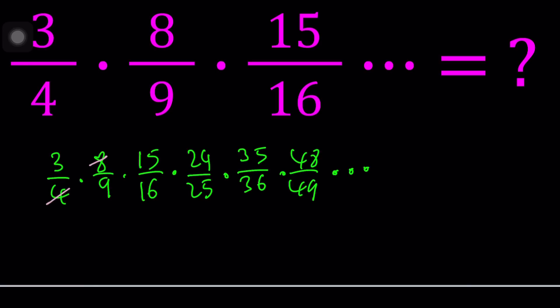4 goes into 8 two times. 9 and 15 don't divide evenly, but they have a common factor — we can divide by 3. 16 and 24 are both divisible by 8, and then those two are divisible by 5, giving us a 5 and a 7. Then 12 is a common factor — a 3 and a 4 — and so forth. The next term will give 63 and 49, which also have a common factor. So we always have a common factor; looks like there's a lot of cross-cancellations.